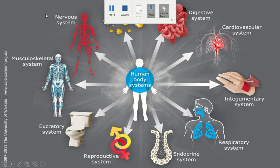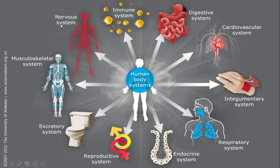The nervous system is one of the body systems, alongside the integumentary, respiratory, endocrine, reproductive, excretory, immune, digestive, and cardiovascular systems.